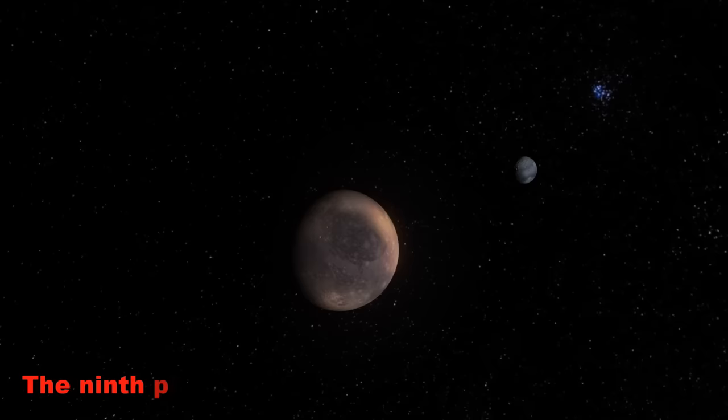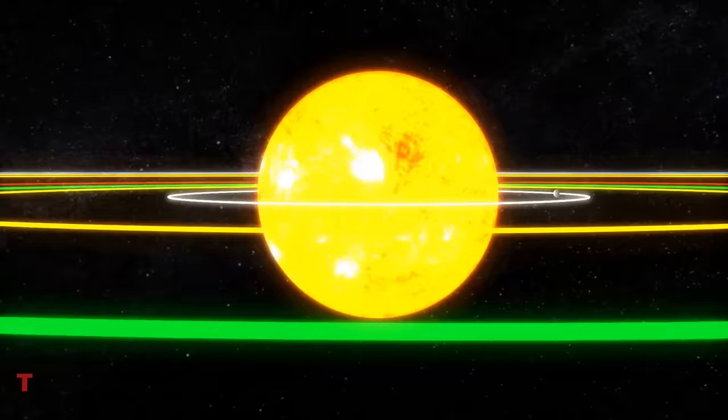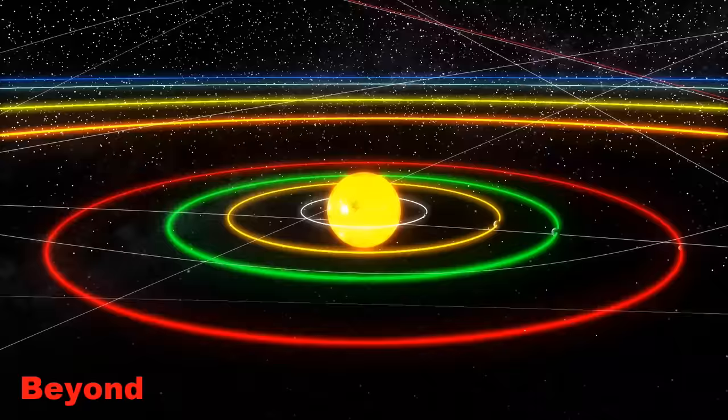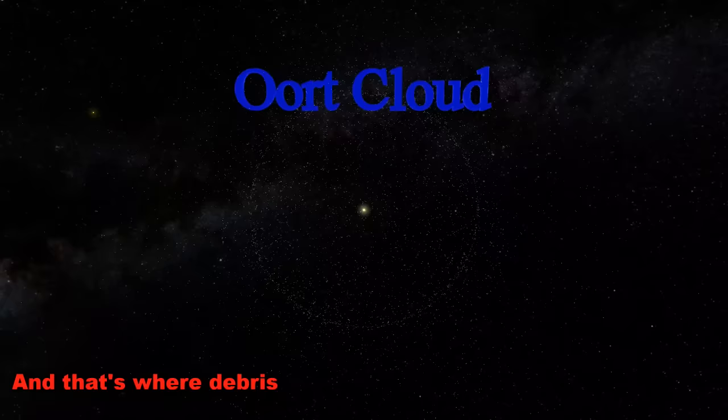The ninth planet was Pluto, but it's a planet no more because it's too small. It's a dwarf planet, but this topic's sore. The planets orbit close to a plane, but Pluto does not, and more dwarf planets were found - that's what got this topic hot. Pluto's big moon Charon is Pluto's little brother, so big that Pluto and Charon orbit one another. Beyond the Kuiper belt is the Oort cloud, and that's where debris from our star's formation can be found.